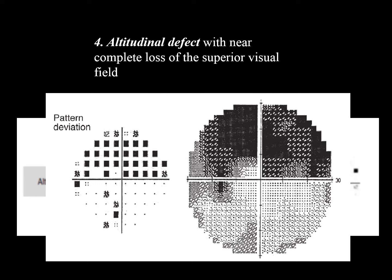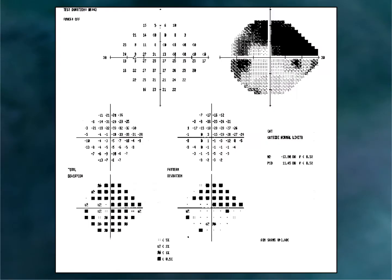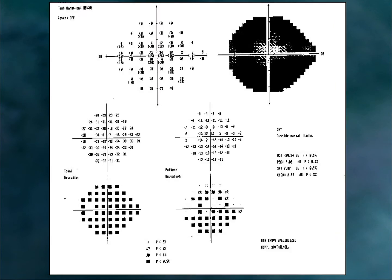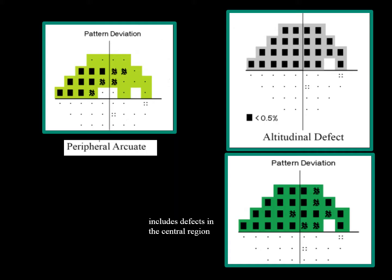At the advanced stage, almost the whole hemisphere is included in the altitudinal defect. Here are additional examples of altitudinal defects. These three points touching one another are taken into consideration. In this example we see an almost complete inferior altitudinal defect with some arcuate changes superiorly. In summary: this pattern is arcuate and this pattern is altitudinal.